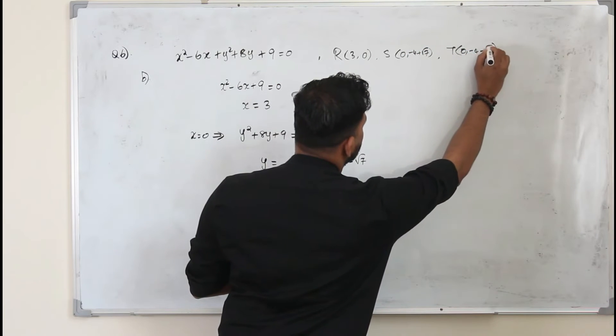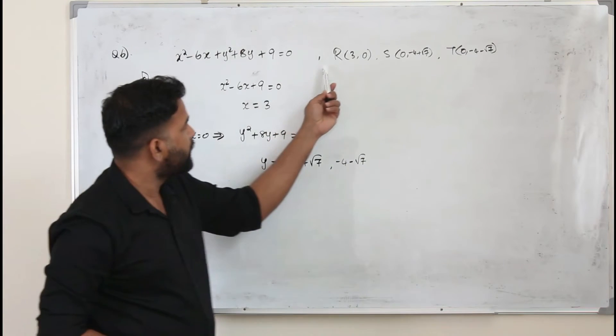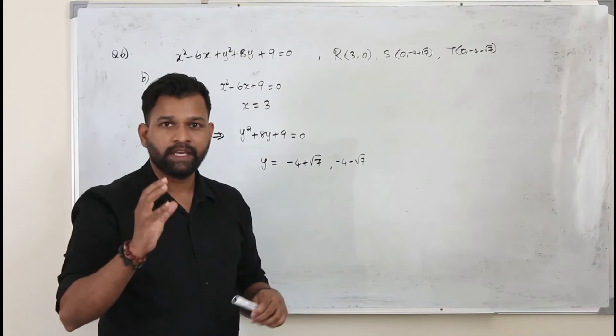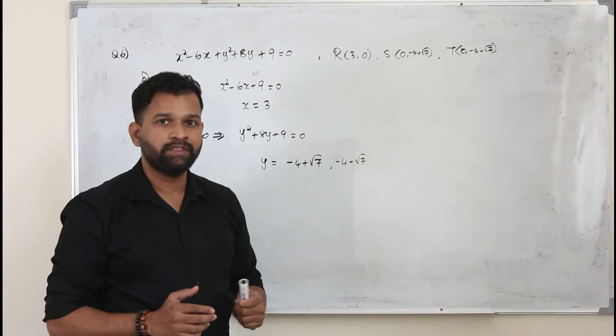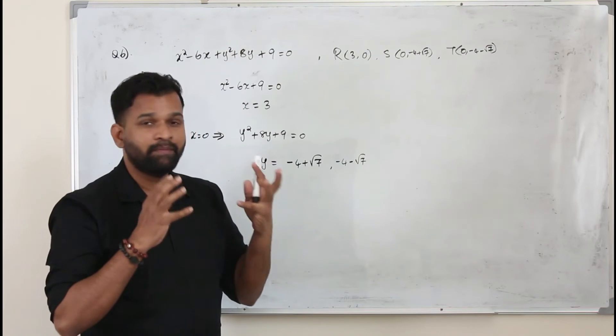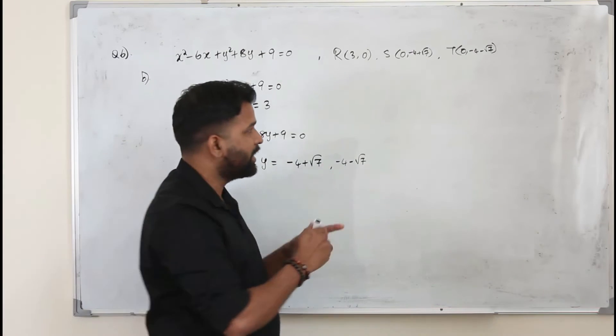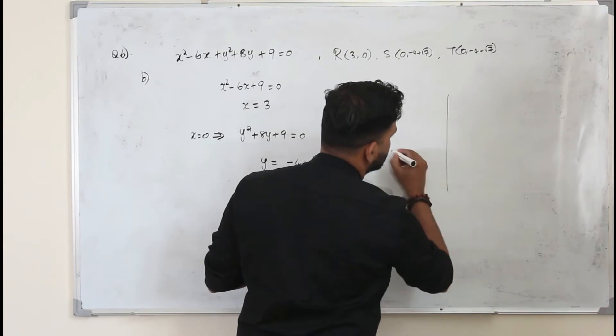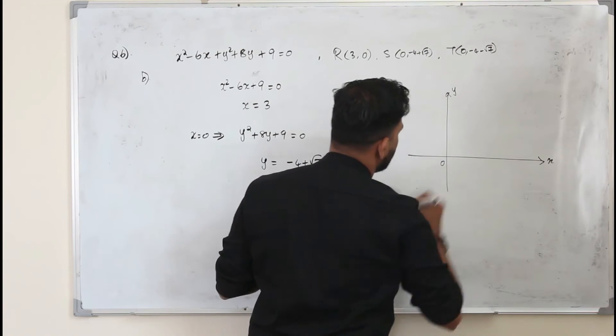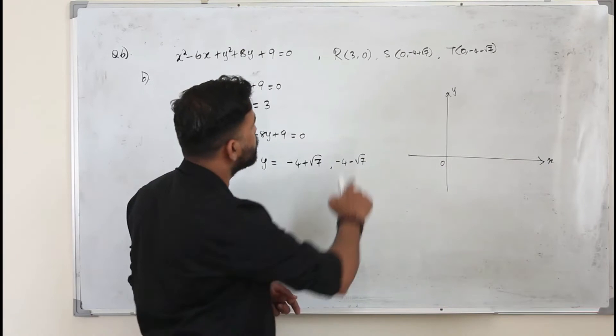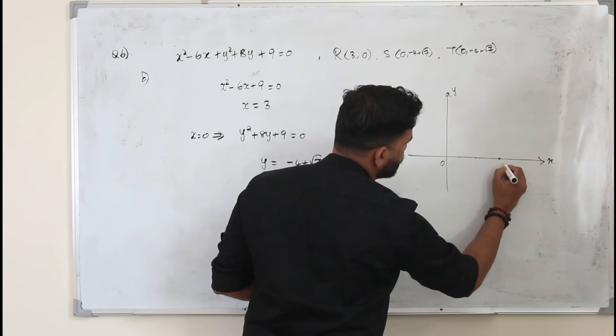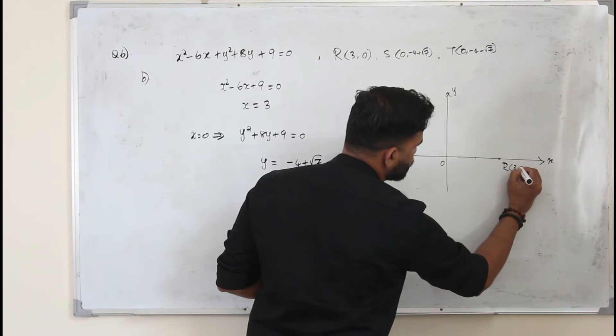Now we are going to find the area of this triangle. As I always say, when you have three points, in order to find the base and height, it will be easy if you sketch a little diagram. So the first point 3 comma 0, x is 3, y is 0. This is r, 3 comma 0.